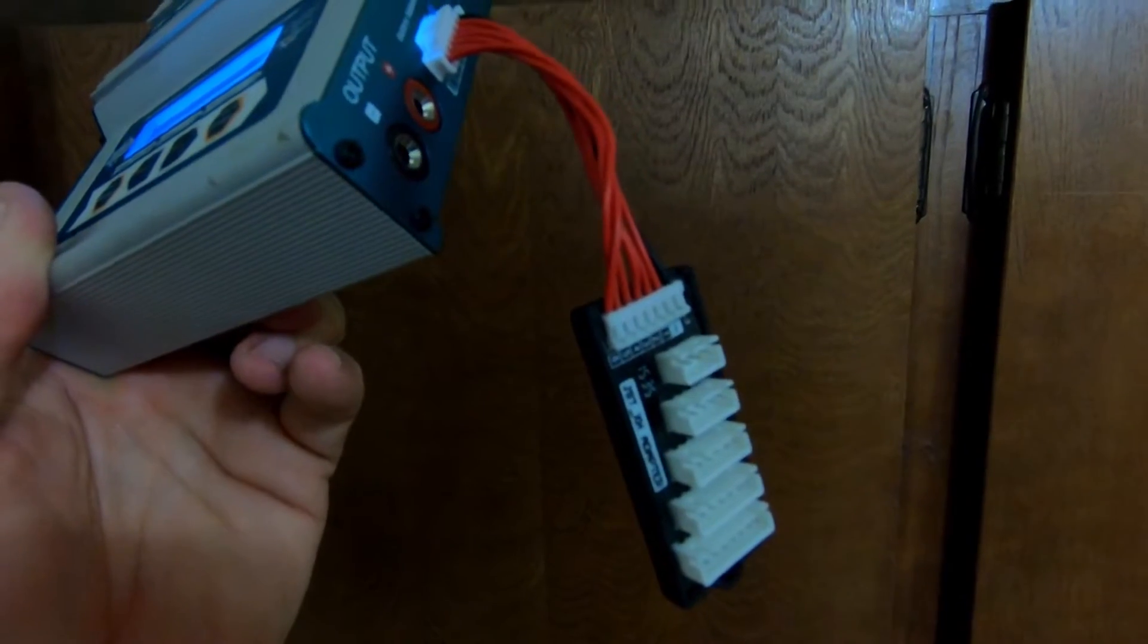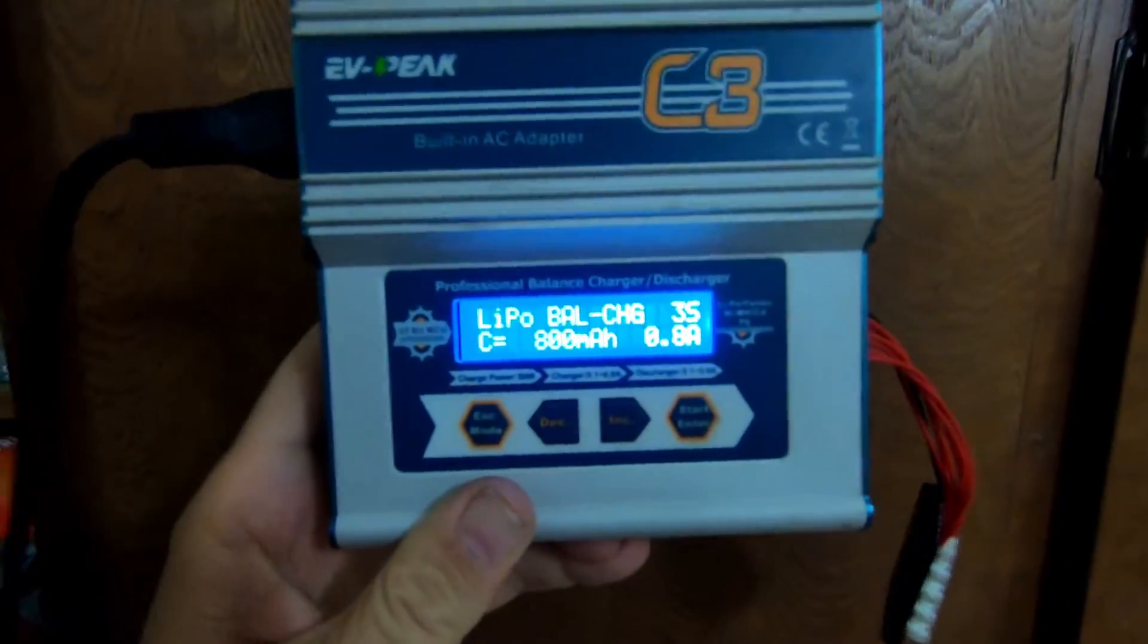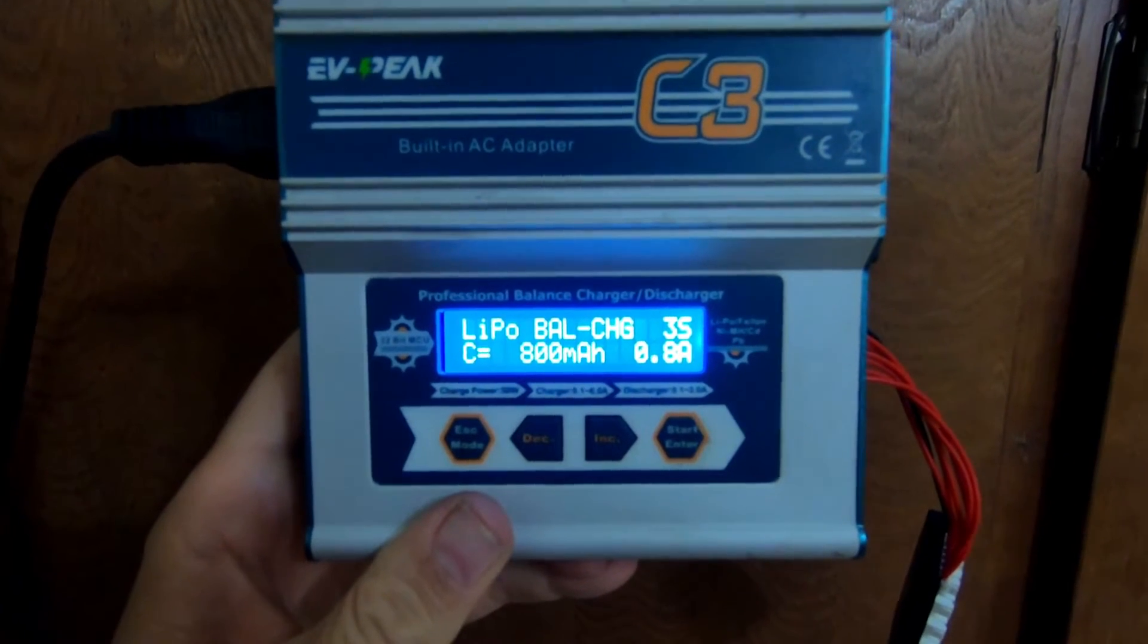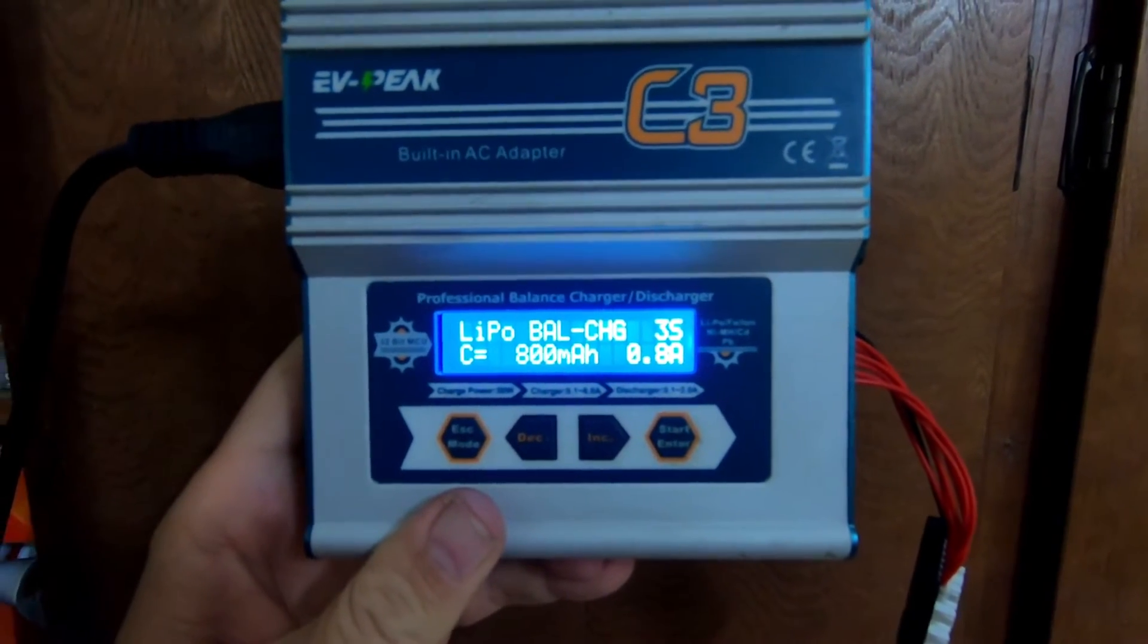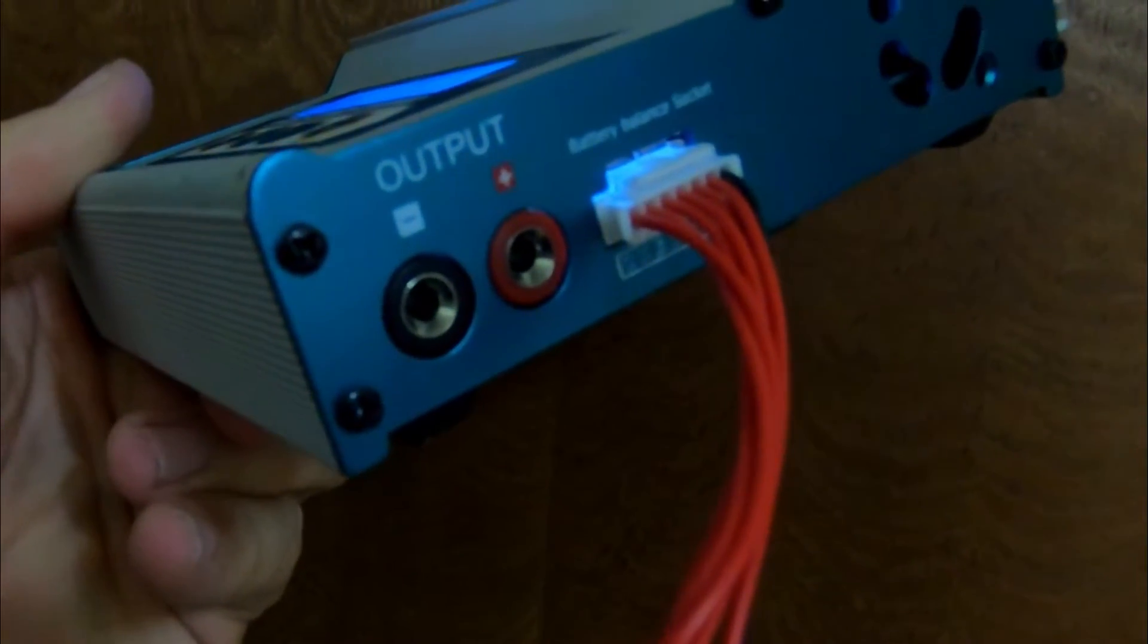And you'll notice I have attached to this, the little balance adapter. So what you're going to need to charge the little E-Flight batteries is a charger that actually charges LiPo batteries that accepts banana clips.